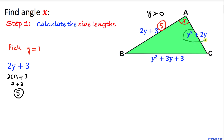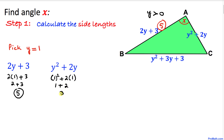Now let's plug y equals 1 into the polynomial for the next side, y squared plus 2y. Replacing y with 1, we get 1 squared plus 2 times 1, which is 1 plus 2 equal to 3. So this side turns out to be 3 units.